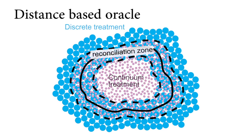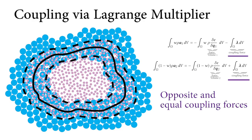We partition the domain into discrete and continuum regions, typically using continuum on the inside and discrete on the outside. The partitions overlap in a reconciliation zone, where equal and opposite forces ensure the models agree.